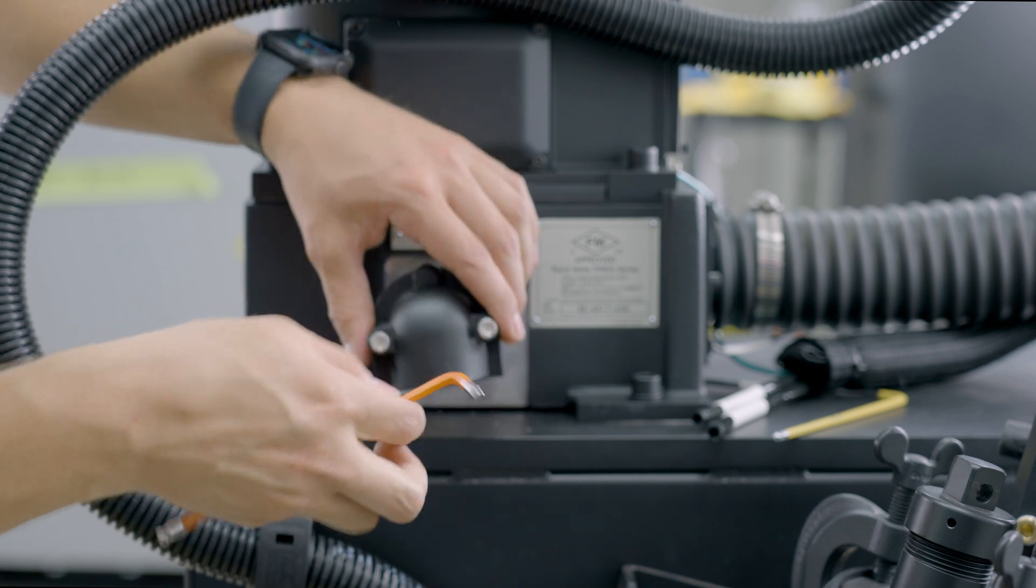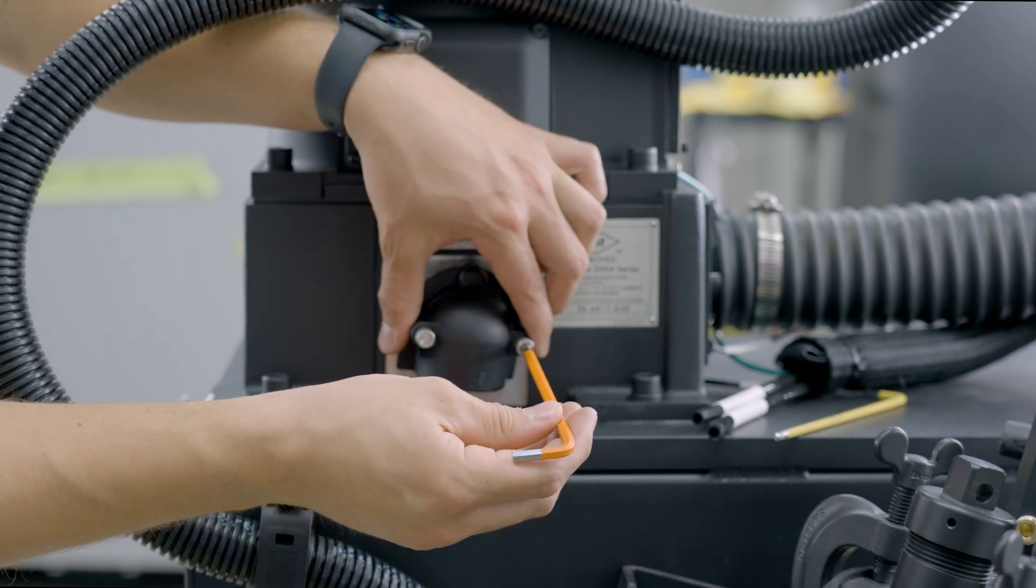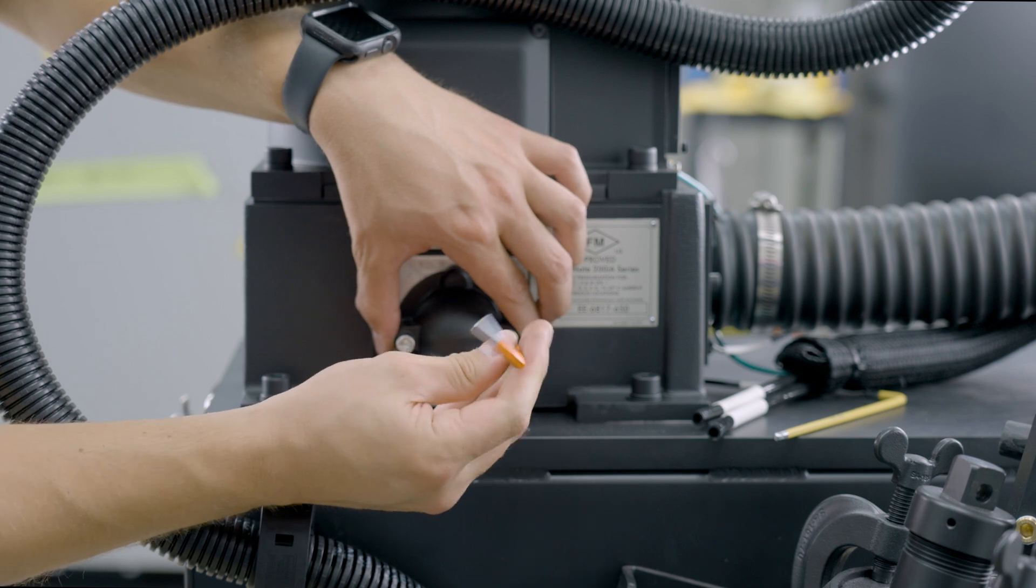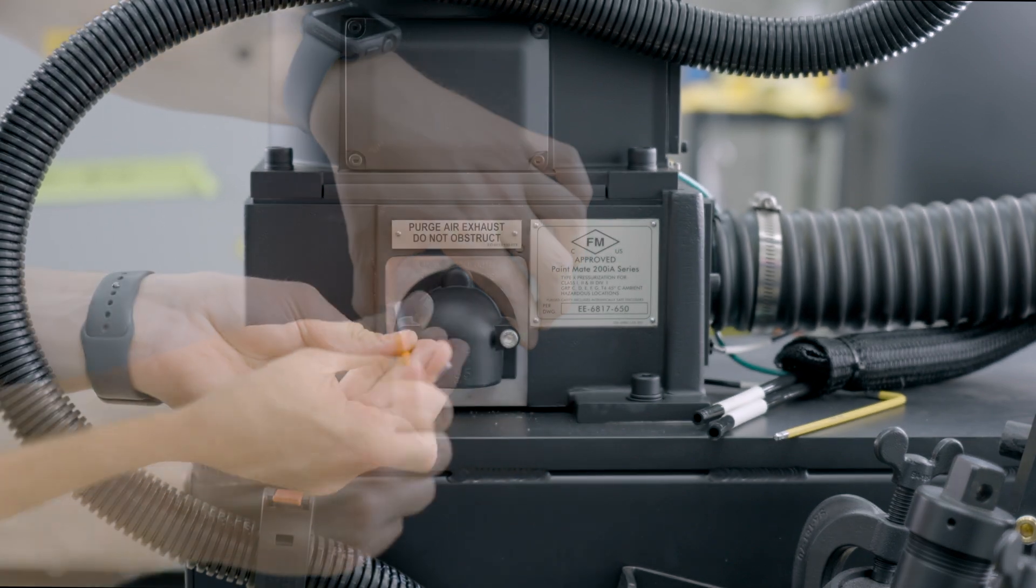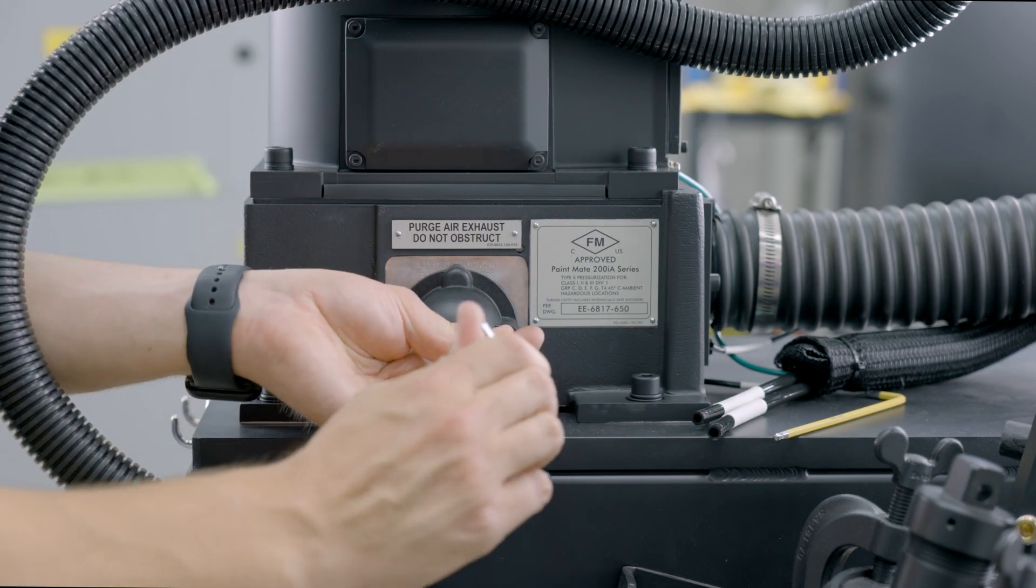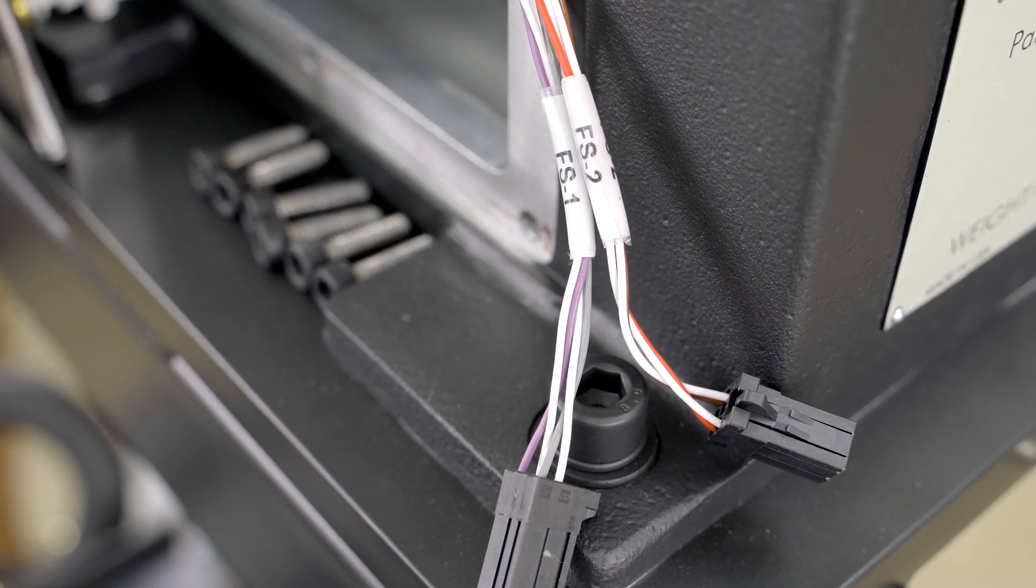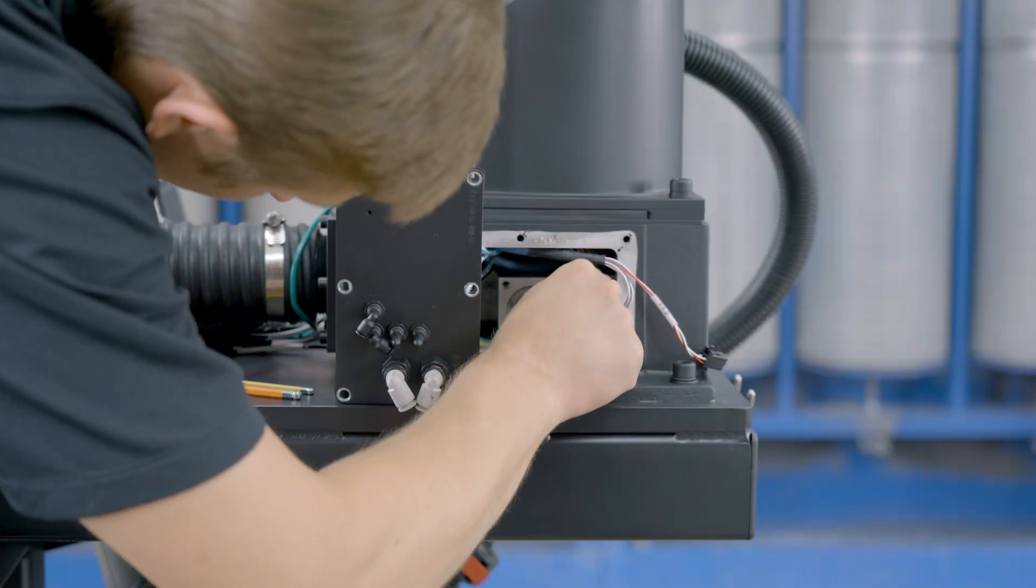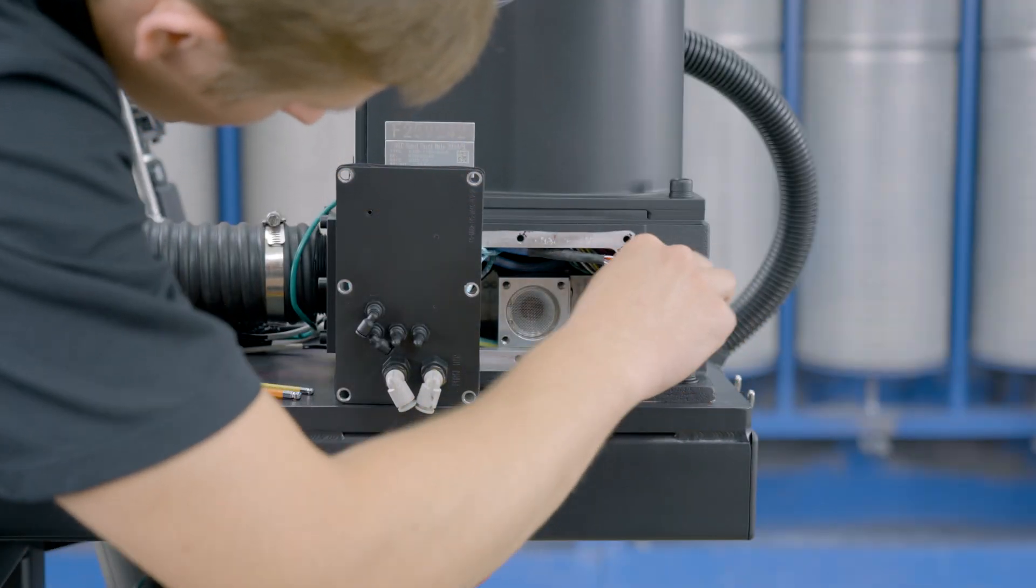Reinstall the exhaust clamshell and gently tighten with a 5 millimeter allen wrench. Reinstall the FS1 and FS2 electrical connections into the purge switch.